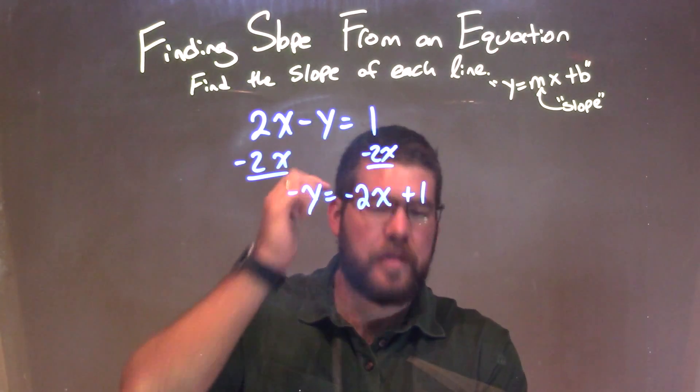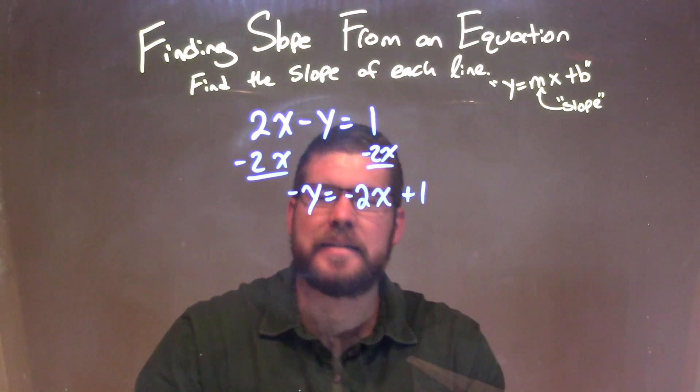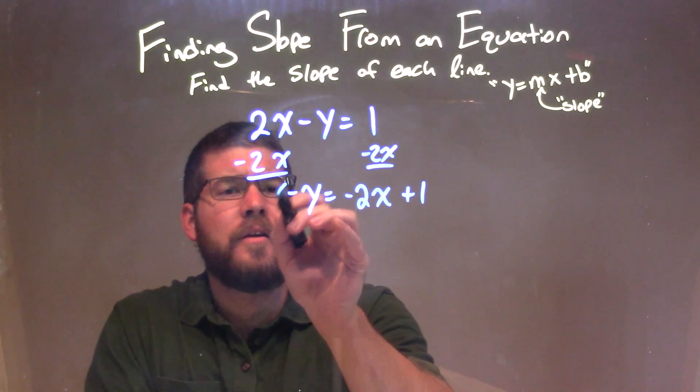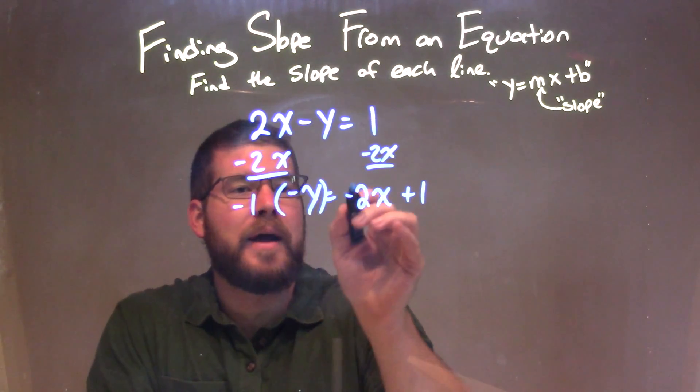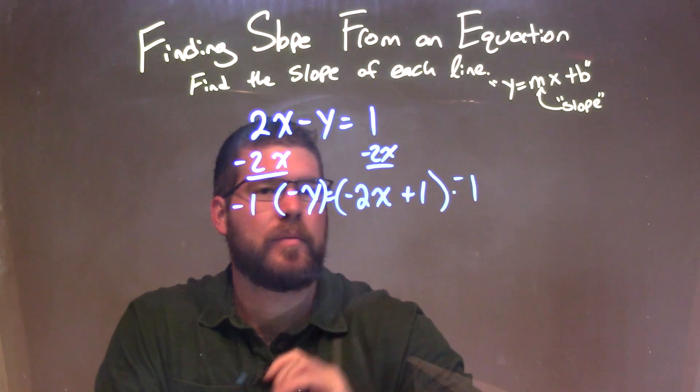I need to get rid of that negative because we want y by itself, not negative y. To do that, I'm going to multiply both sides by negative 1.